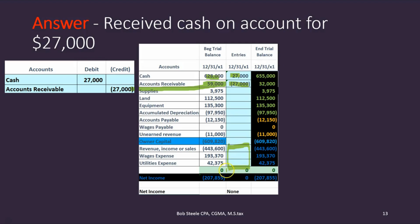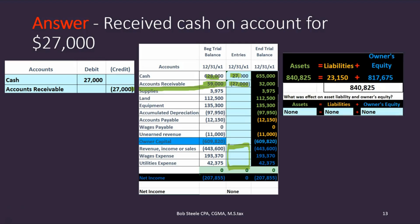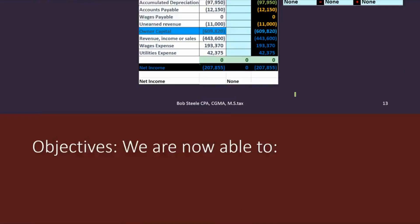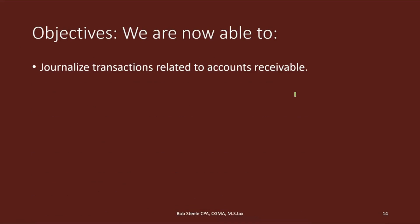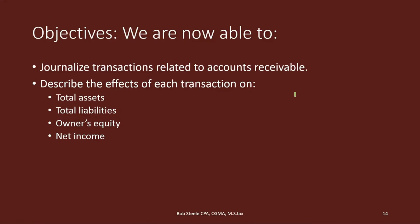Notice there's no effect on net income from this transaction. Even though we got cash, we did the work in the past. According to the revenue recognition principle, we recognize revenue when we earn it, not when we receive the cash. Looking at the accounting equation: cash went up but receivable went down, so no net effect on assets. No effect on liabilities or owner's equity either — the accounting equation stays the same. So we are now able to journalize transactions related to accounts receivable and describe the effects on total assets, total liabilities, owner's equity, and net income.